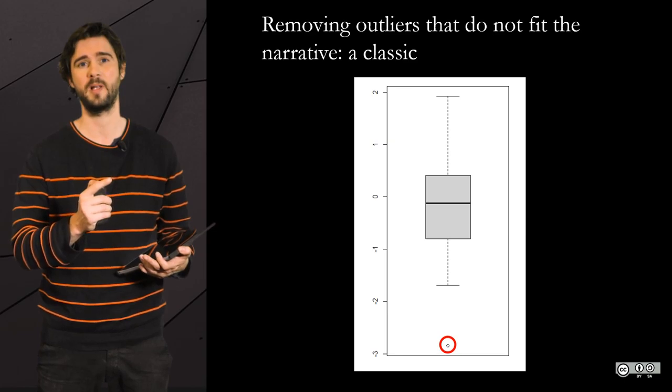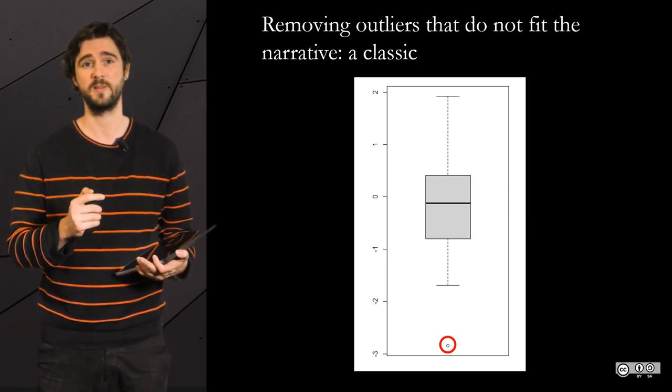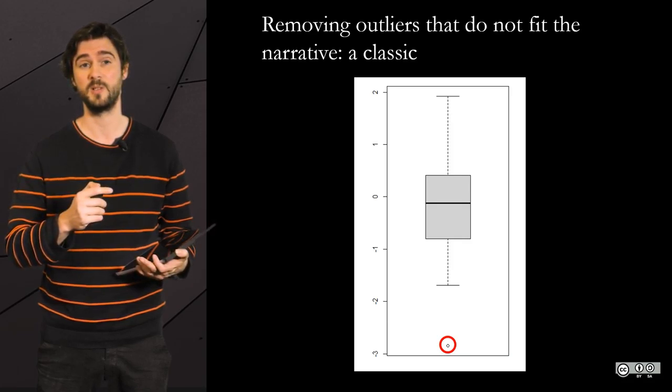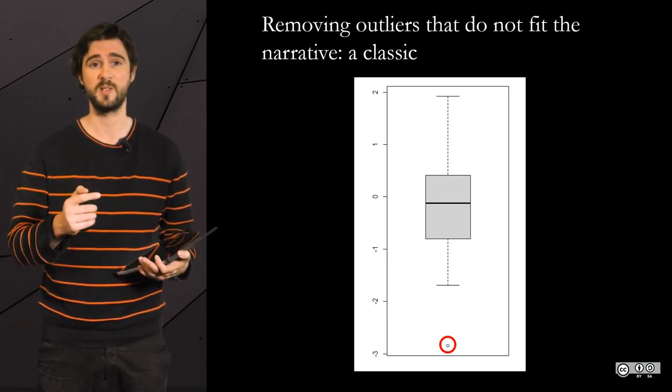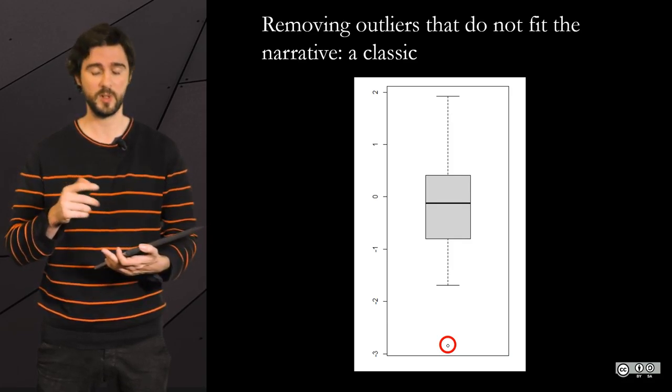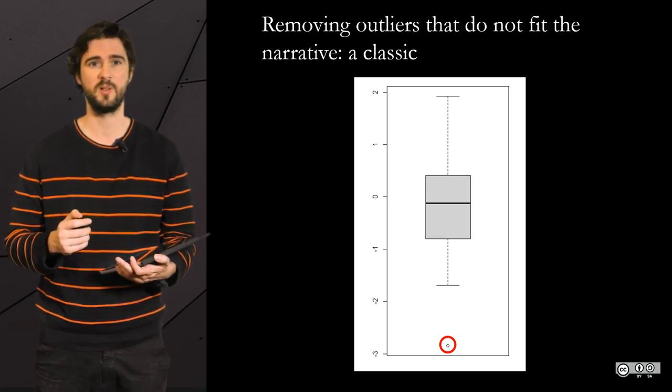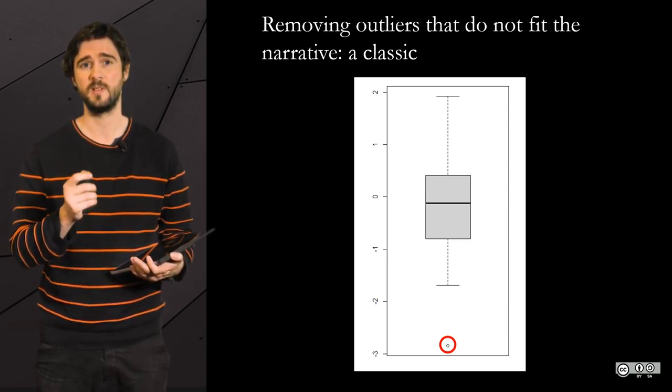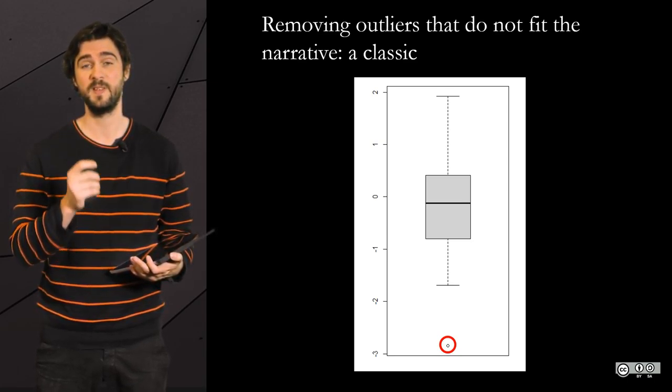And it's not uncommon for scientists to remove the outliers that threaten their narrative, without necessarily saying so when describing the methodology. With a graph, for instance, an outlier would look like that on a box plot, far from the rest of the points. It is inconvenient to narrate in a narrative.